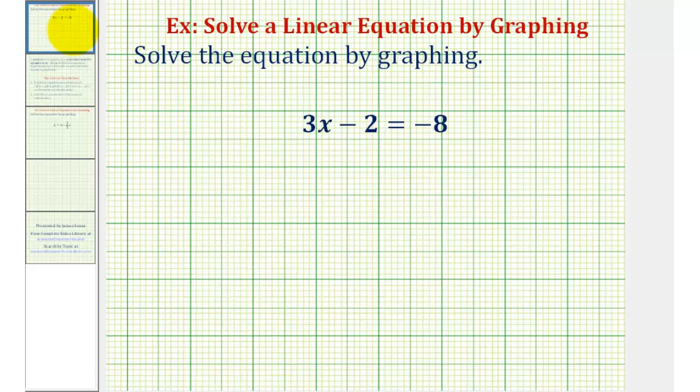So going back to our first example, we're going to let y1 equal 3x minus 2, and y2 be equal to negative 8. Graphically, we'll determine when y1 is equal to y2.